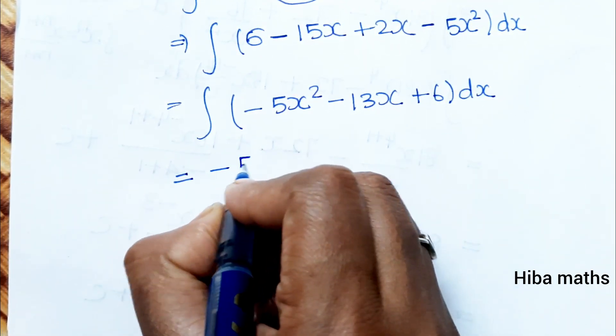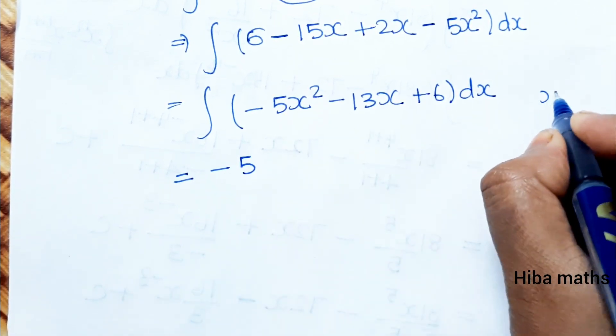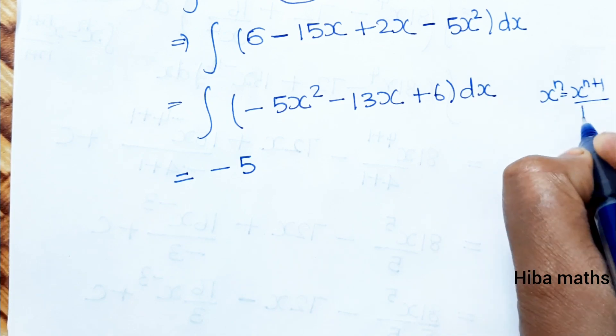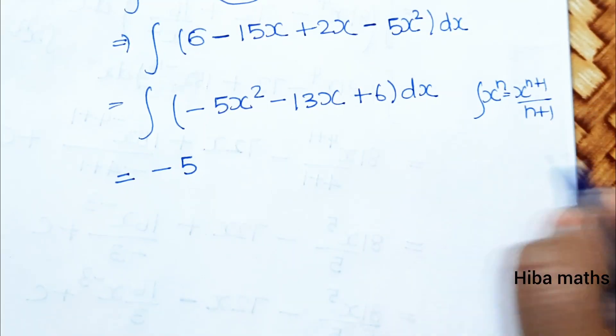For x², we apply the power rule: x^n becomes x^(n+1) divided by (n+1).